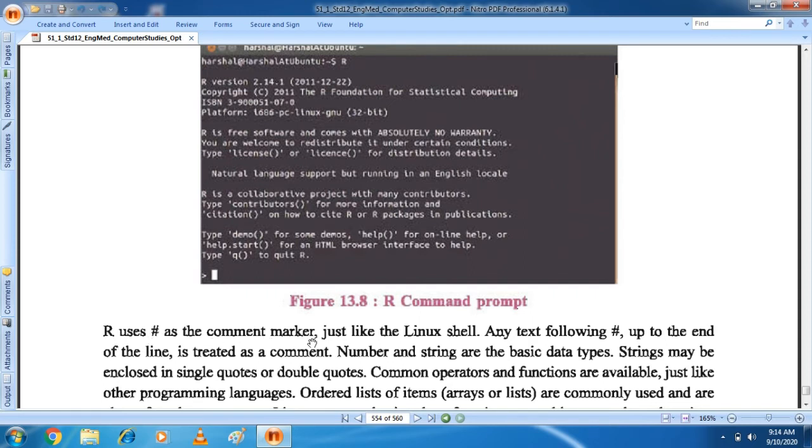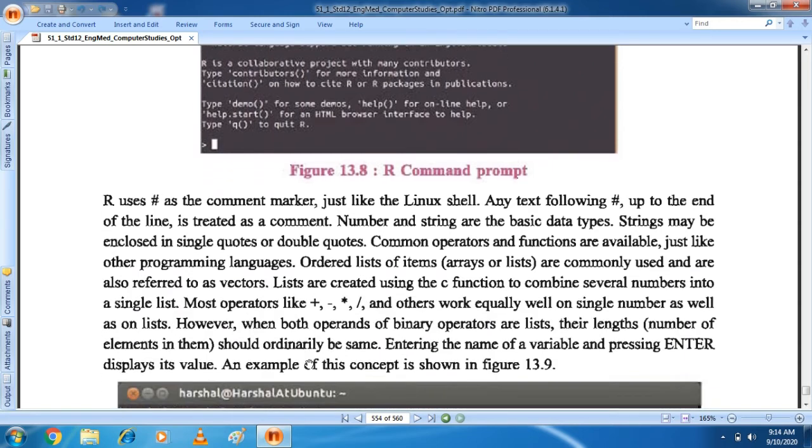R uses hash as the comment marker. If we want to write comment, then R software has to use hash, just like the Linux shell. Any text following hash up to the end of the line is treated as a comment. Number and string are the basic data types. Strings may be enclosed in a single quote or double quote. So when string happens, we can use single quote to open and close, and double quote also can open and close. Like we can write, echo, I am Indian. We can write double quote.